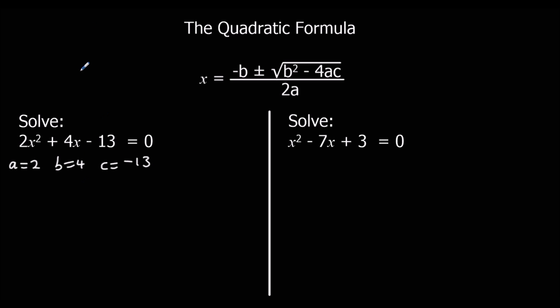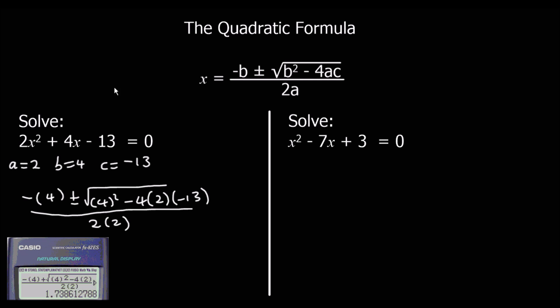And then we just do the substitution. So it's minus 4, plus or minus the square root of 4 squared, minus 4 times 2 times minus 13, all over 2 times 2. So we type this in the calculator. First, you have the plus sign. So that gives us 1.74. So x equals 1.74, 3 significant figures again.